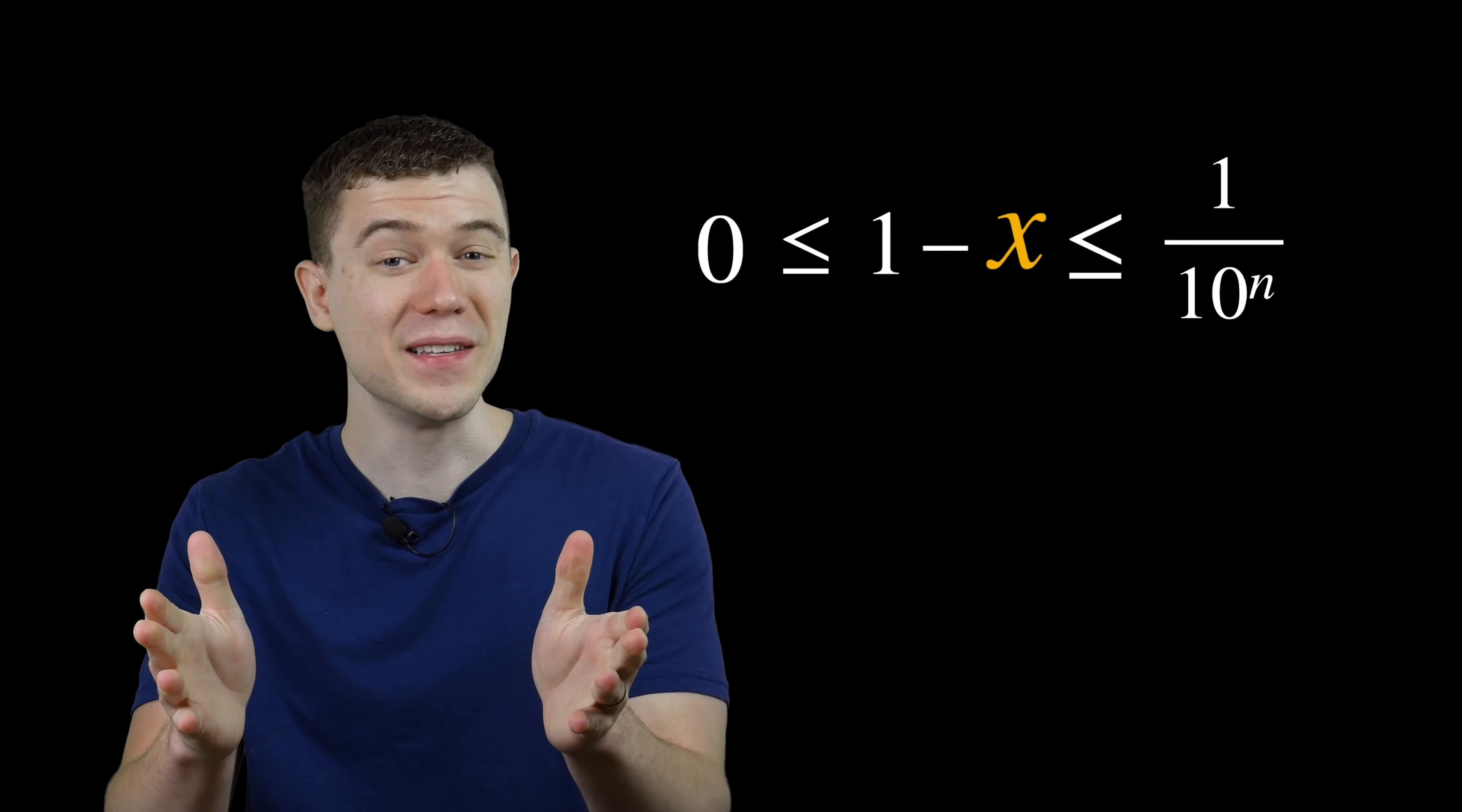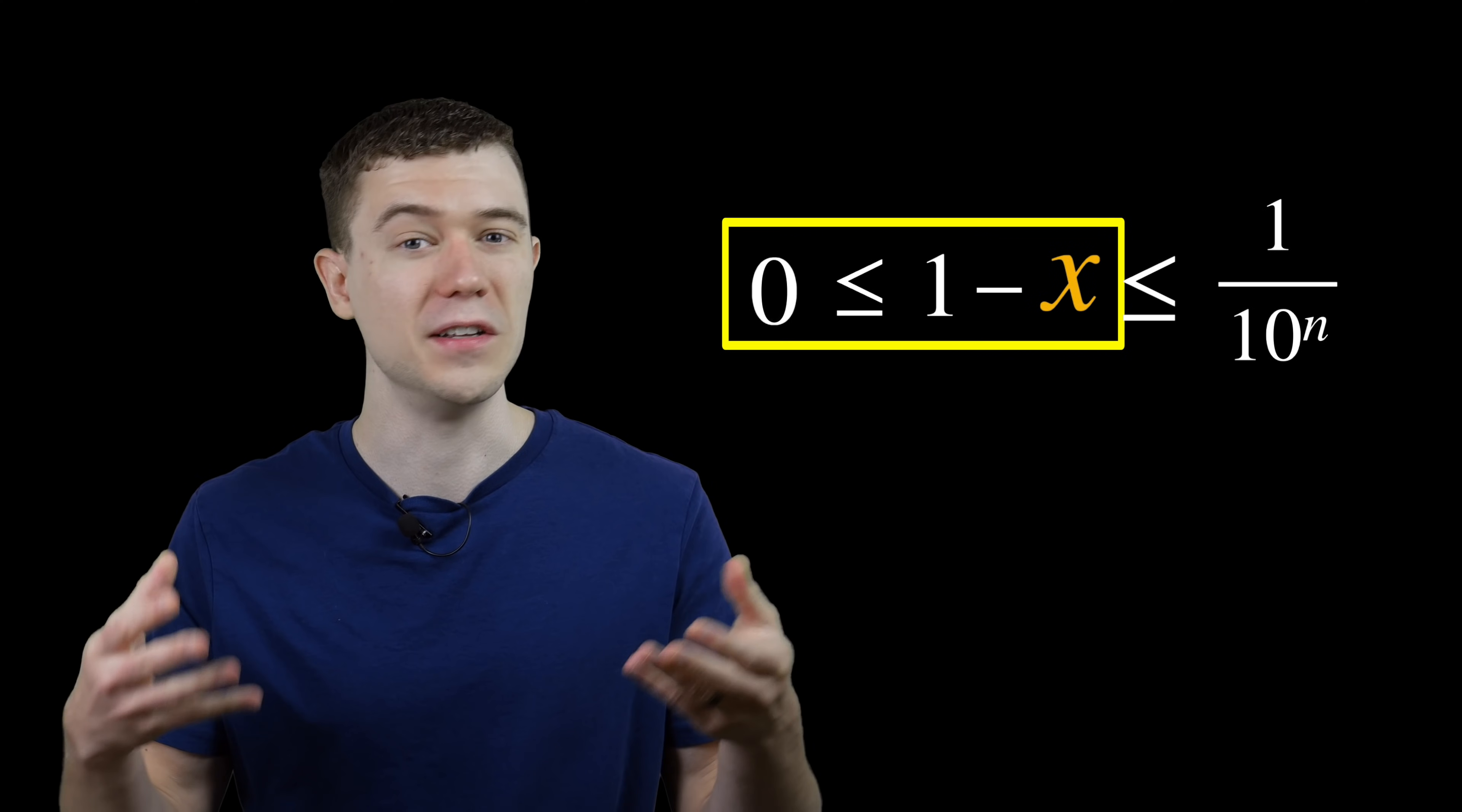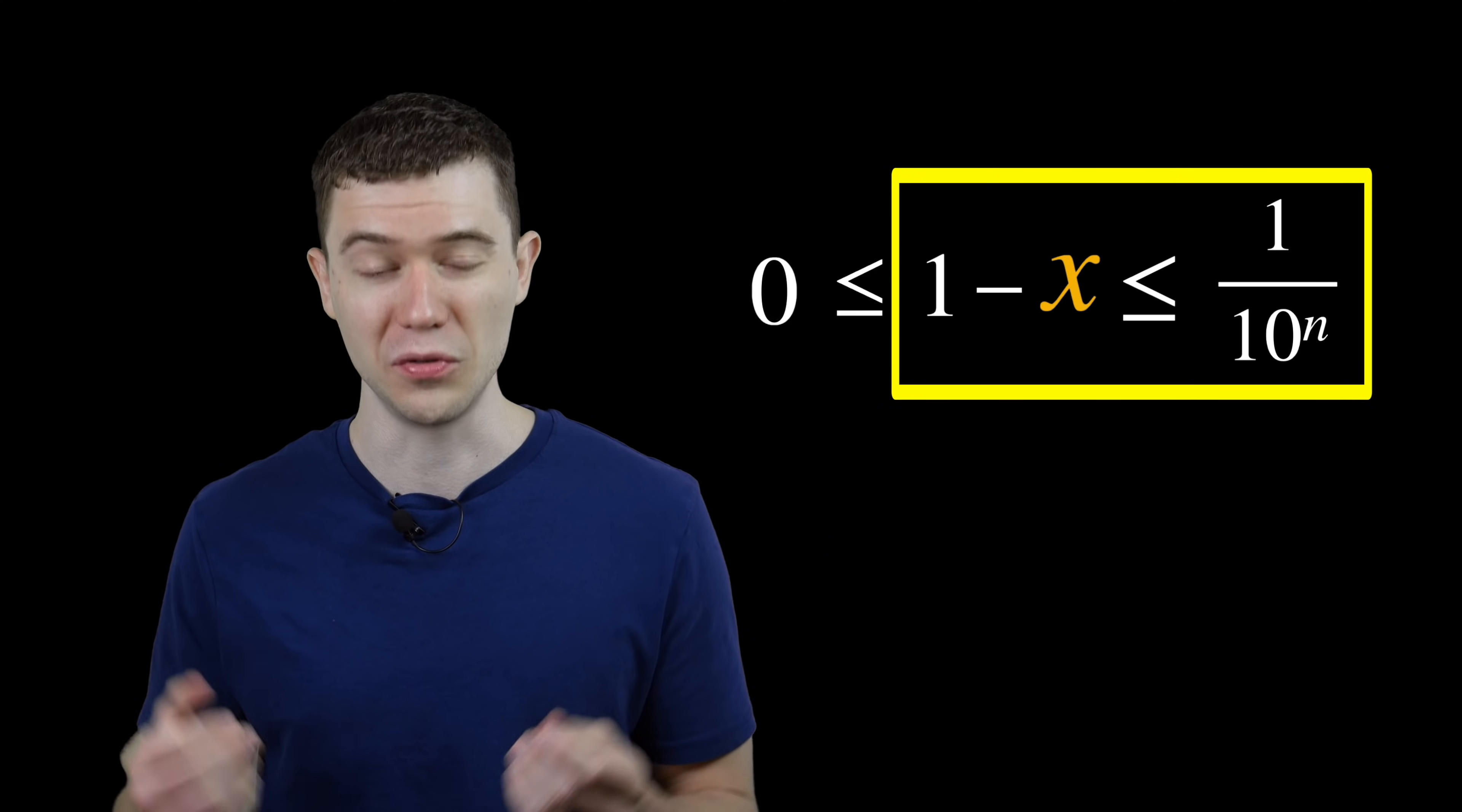What's the consequence of this? That quantity, 1 minus x, is non-negative. It's greater than or equal to 0, and it's less than 1 over 10 to the n for any natural number n.